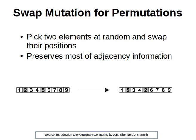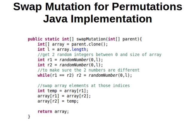This method preserves most of the adjacency information, so no major changes happen in the chromosome. Looking at an example, let's say we have our input as a simple integer array. We randomly choose two points — let's say two and five — and we just swap them, so five comes here and two goes there.